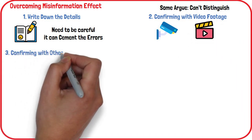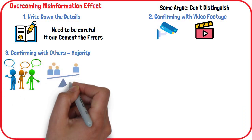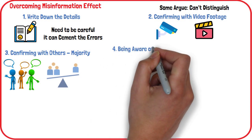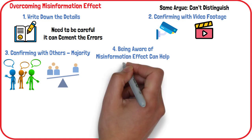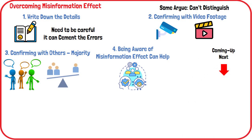It may also be beneficial to consider other people's recollections of the event. If they are all saying the same thing and it is different from what you remember, the misinformation effect may be at play. Anyone can experience the misinformation effect; however, being aware of this can help you be more alert when recalling an event, potentially reducing your susceptibility to creating false memories. That's all on the misinformation effect — in the next video we shall learn about the actor-observer bias.